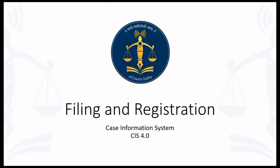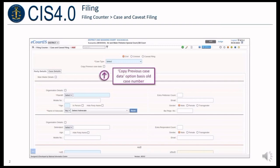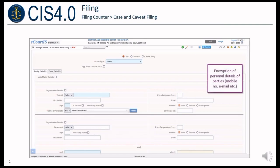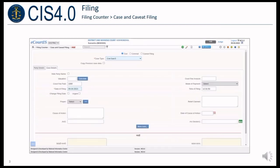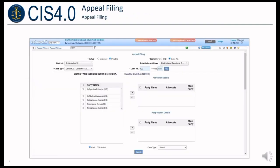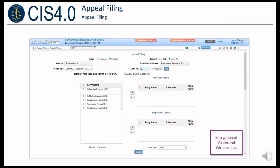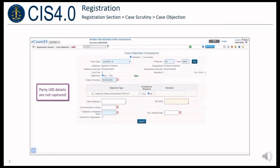In the Filing and Registration module, facility to copy previous case data using an old case number through a checkbox option is provided. A High Party option checkbox is provided, and the system will prompt for selection of this checkbox if the age provided is below 18 years. Personal details of parties such as mobile number and email are always encrypted. Details of court fee paid are available as an input field in the case details tab. Nature of case as civil or criminal will be based on the lower court case type. A link is provided for the appellate court to view the old case data. All victim and witness data are encrypted.